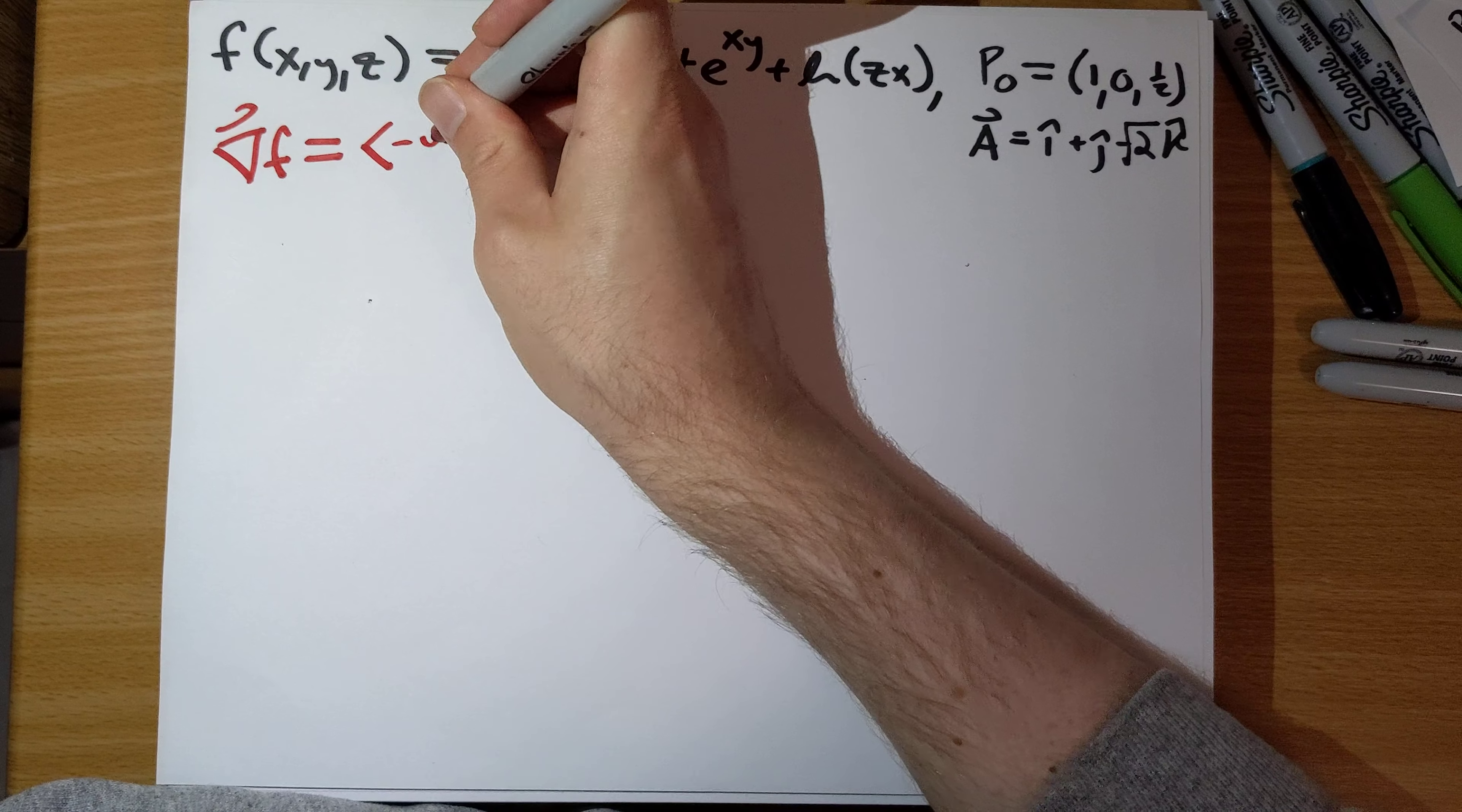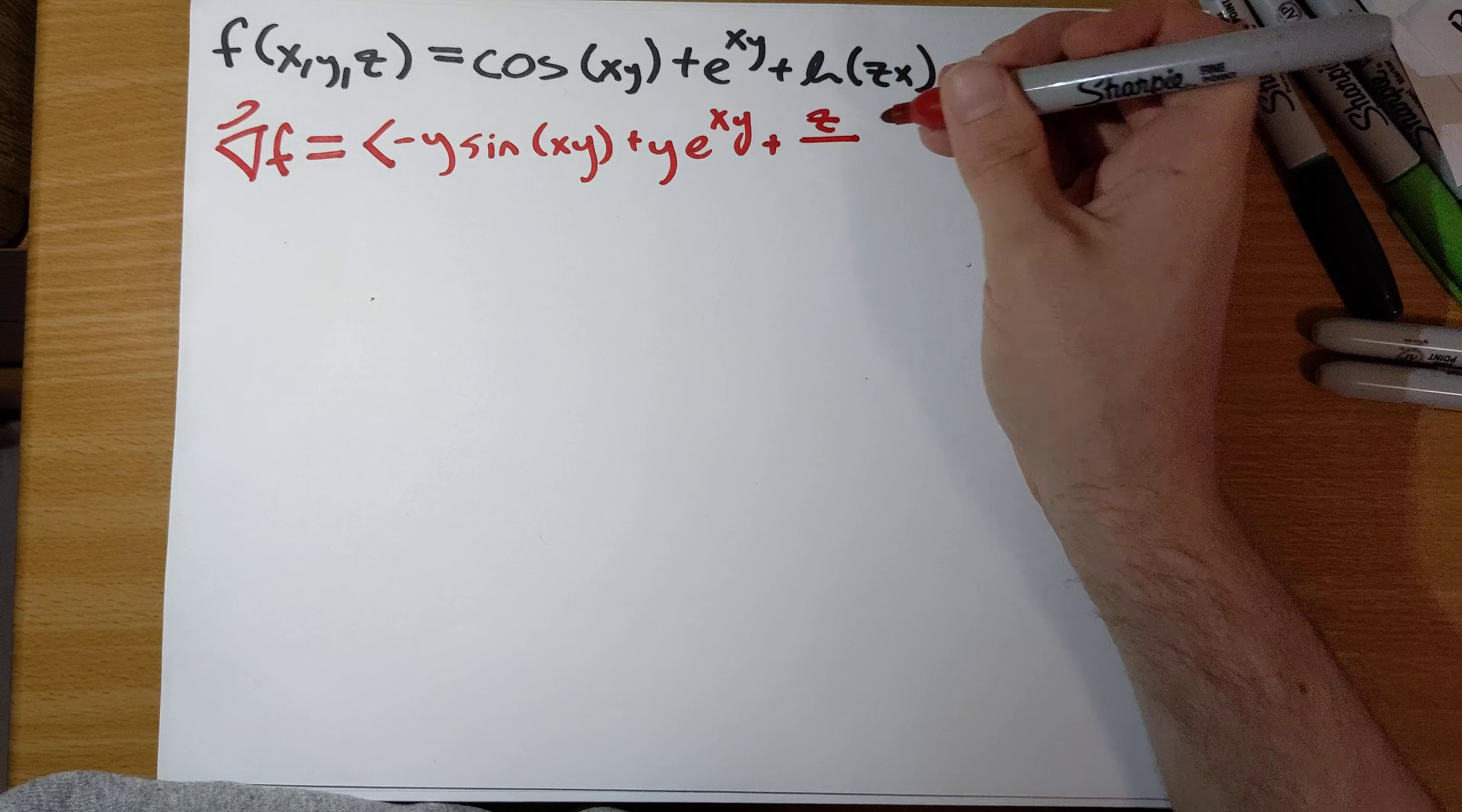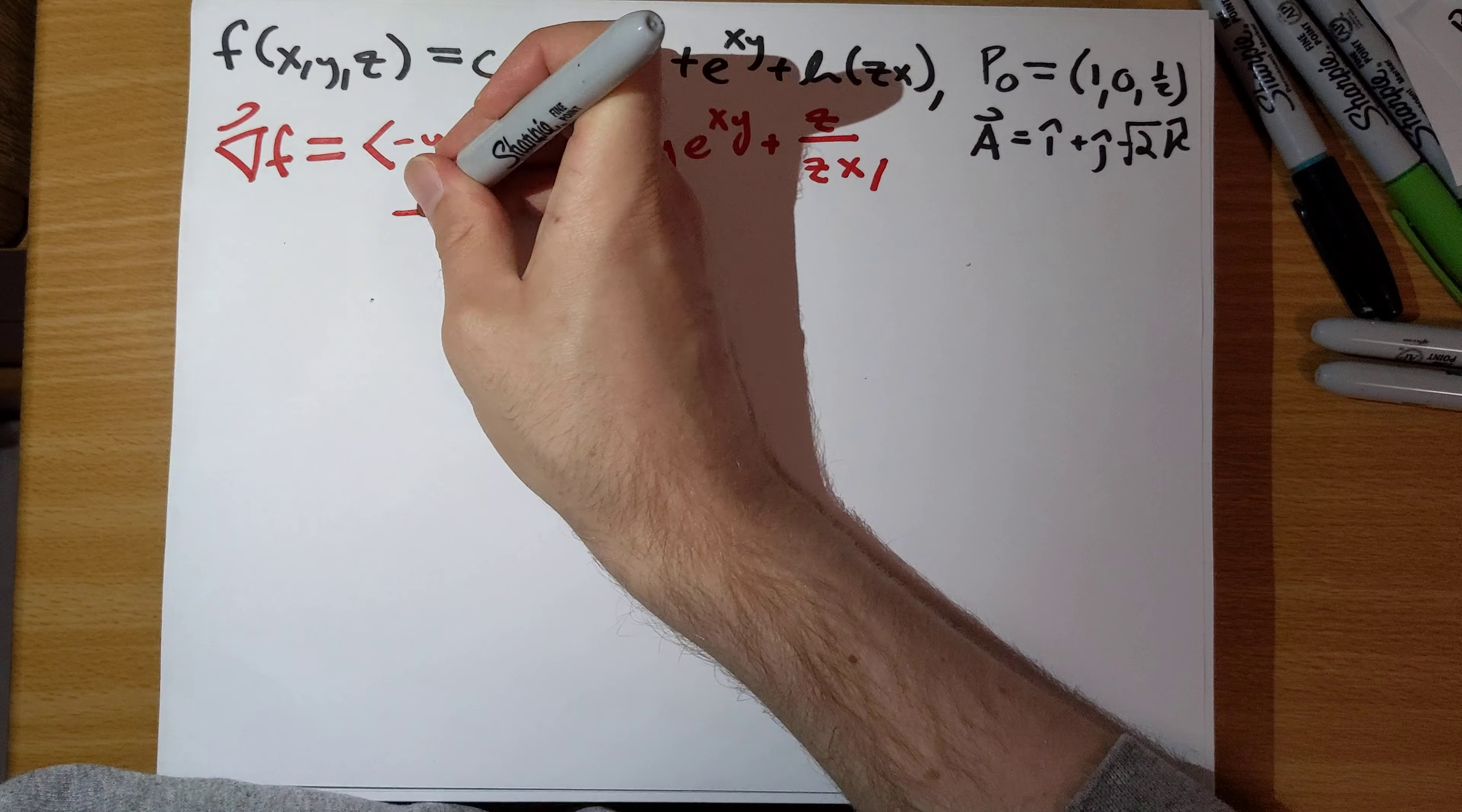The derivative of this respect to x is going to be what? Negative y sine of xy plus ye to the xy plus z over z times x. That's the x partial derivative.